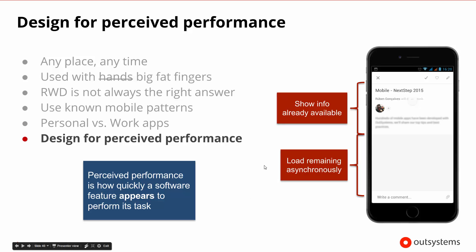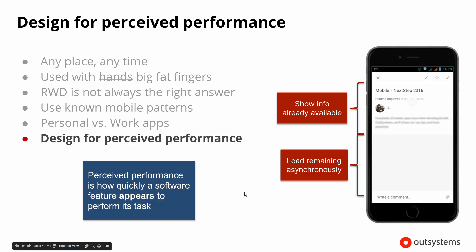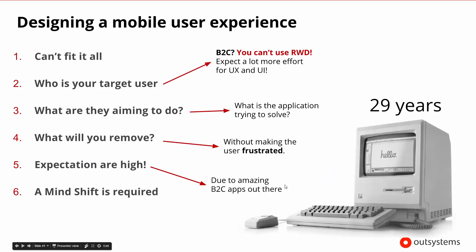When designing the different parts of our app, one thing we should always remember is designing for perceived performance. We want good performance, but we may have different types of information that is readily available. Why not put the information we do have on the screen as quickly as possible and then load the rest when it's available? Perceived performance is about how it appears to perform, not necessarily how it is performing. Sometimes displaying some data keeps users distracted and happy while we load the other information asynchronously.